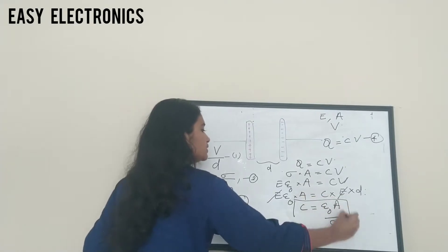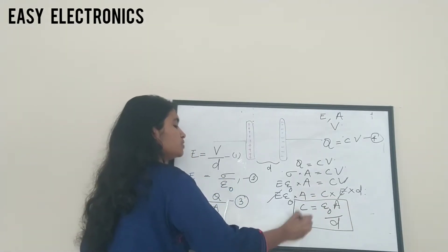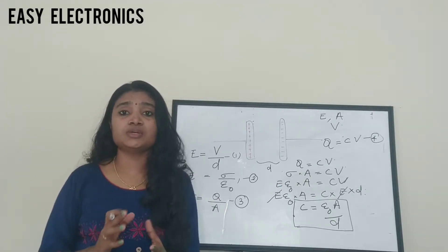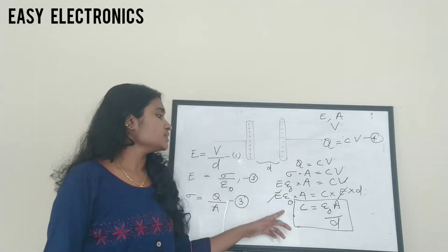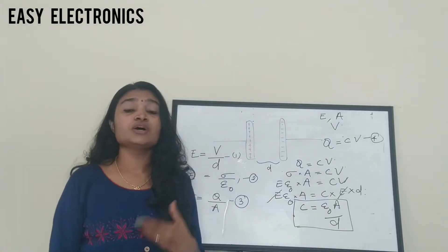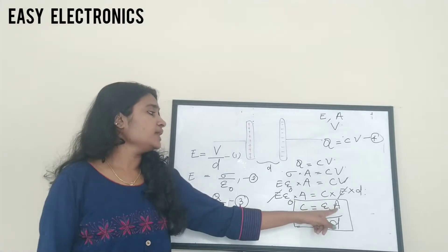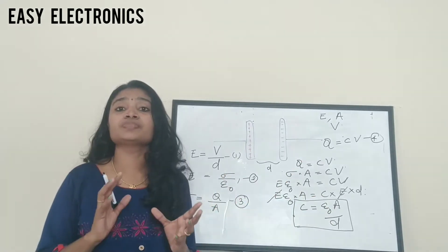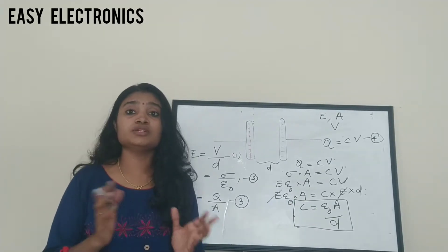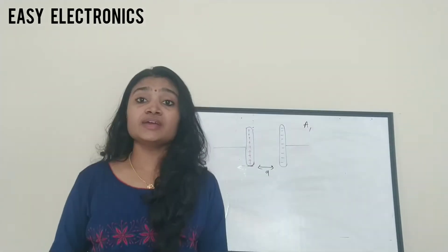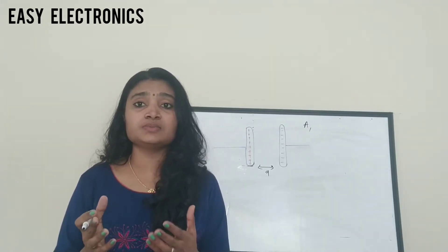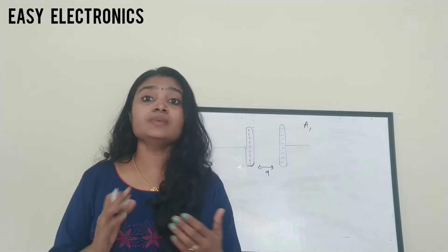So the general equation for a capacitor with air as the insulator is C = ε₀A/D. Here C is the capacitance, ε₀ is the permittivity of free space, A is the area of the metal plates, and D is the distance between the metal plates. This covers the case for free space or air between the capacitor plates.